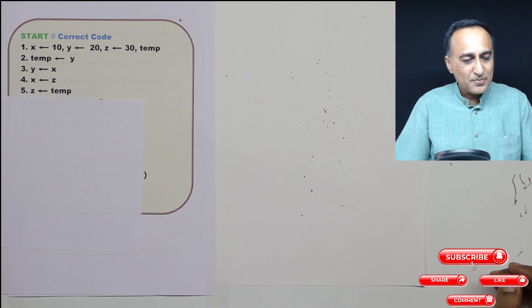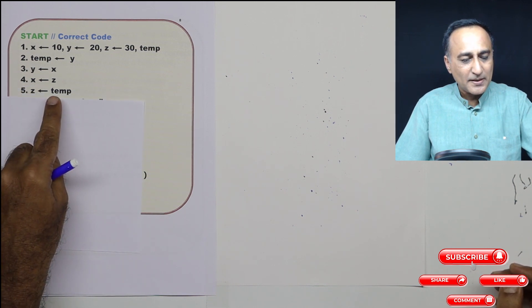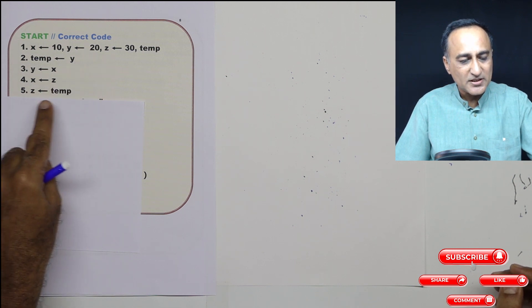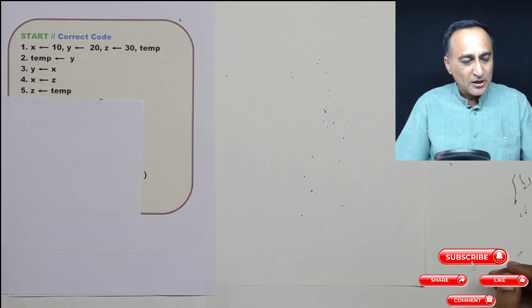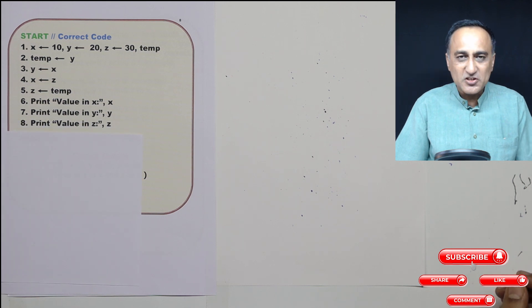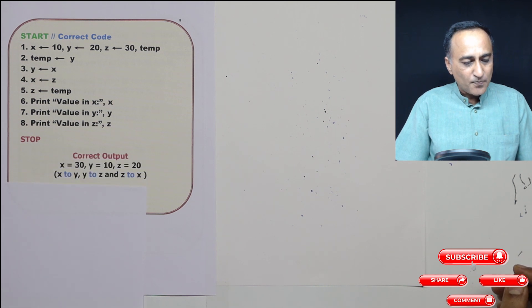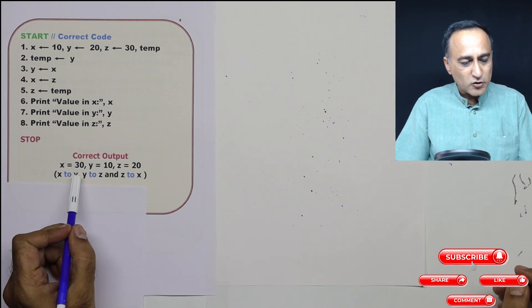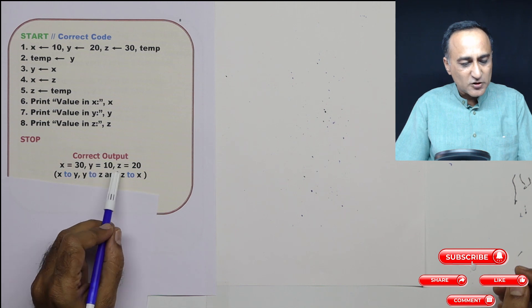Then last step is z is given the value of temp, temp had the value 20. So z got the value temp. Now if I print the value in x, y and z, now the exchange will have happened correctly as per the requirement. So the correct output should be x should be 30, y should be 10, z should be 20.